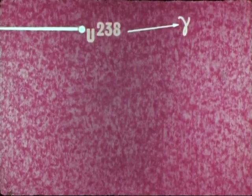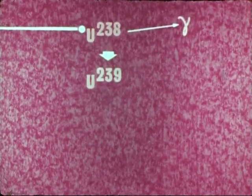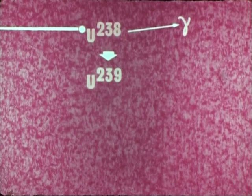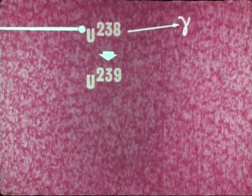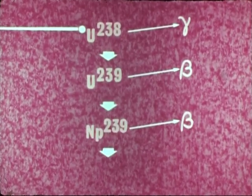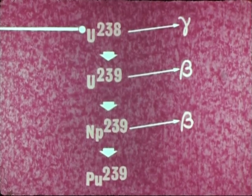This conversion of U-238 occurs when a neutron penetrates the nucleus, producing a heavier atom, uranium-239. This U-239 decays to produce plutonium, which is fissionable and can be used as a reactor fuel.